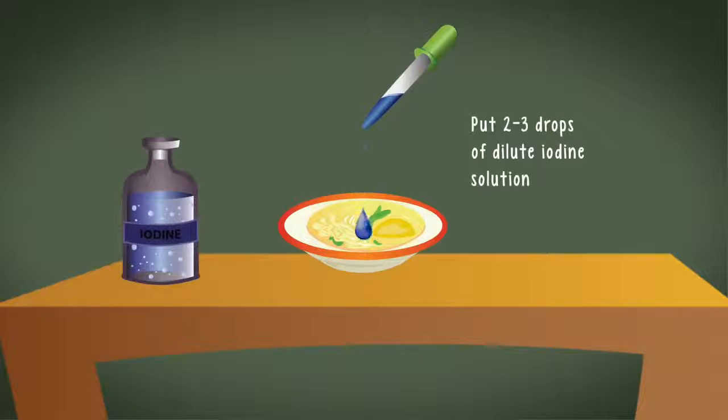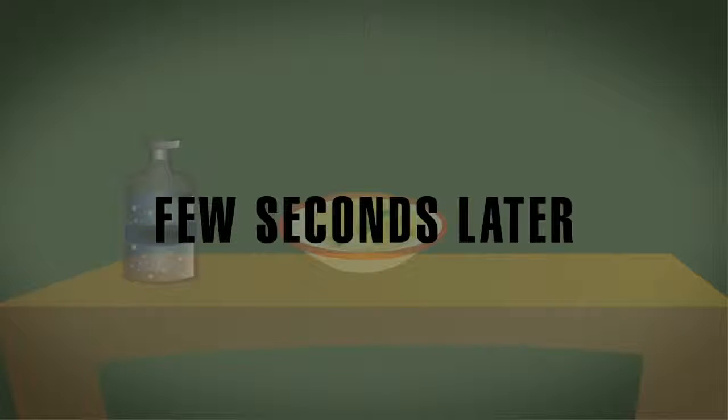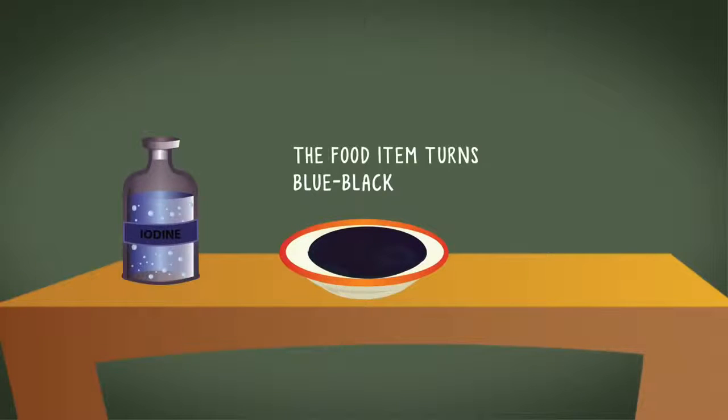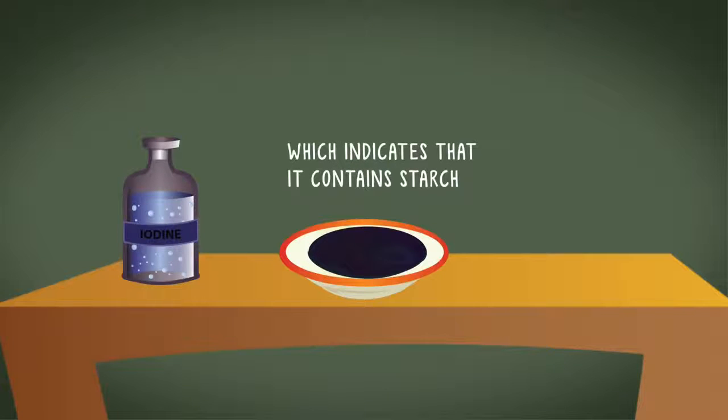Put 2-3 drops of dilute iodine solution. Observe if there is any change in the color of the food item. Did it turn blue-black? Yes. A blue-black color indicates that it contains starch.